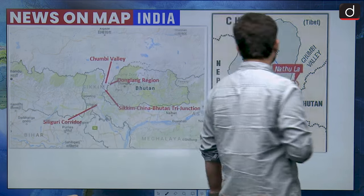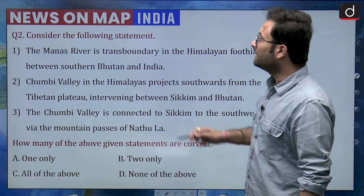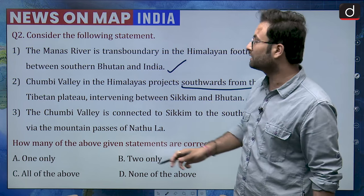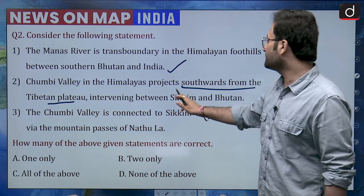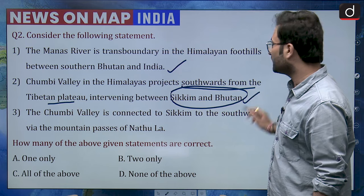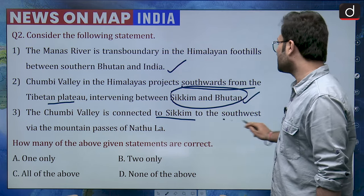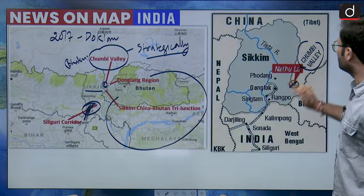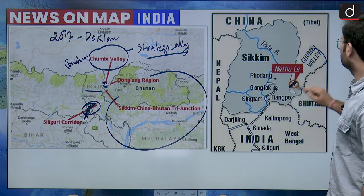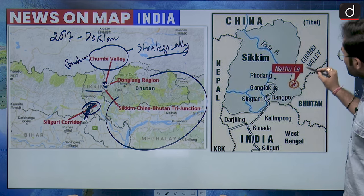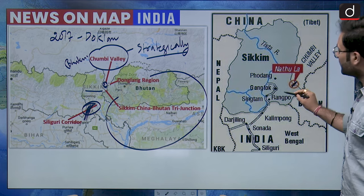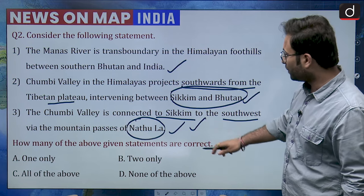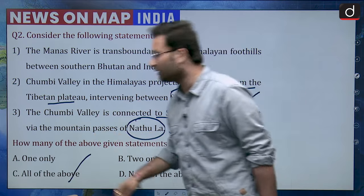That is why India is working on various projects through Bangladesh or Myanmar to connect the northeastern region to the mainland. When we talk about Chumbi valley and Sikkim, you can see this pass — Nathula pass — which connects Chumbi valley to Sikkim to the southwest. All three statements are correct, so all of the above would be the right answer.